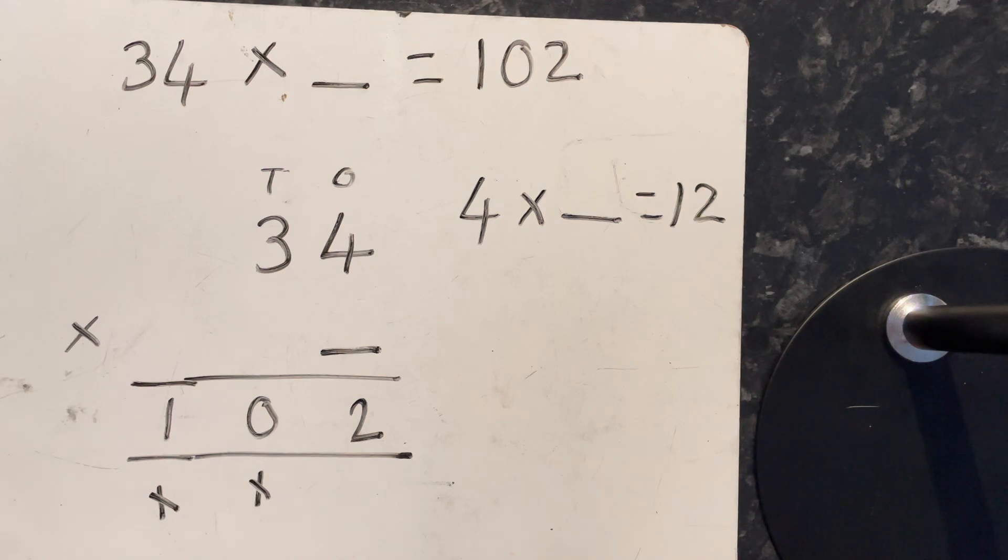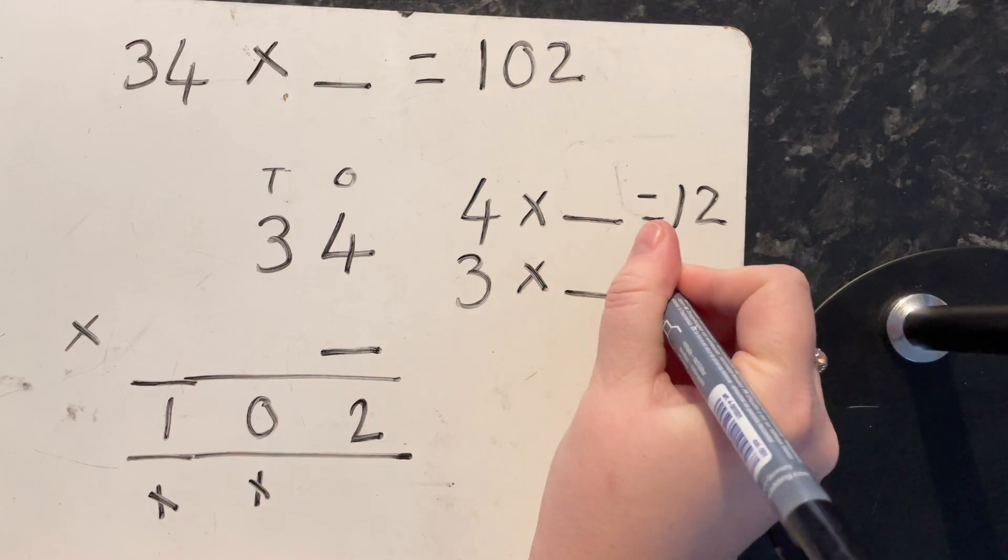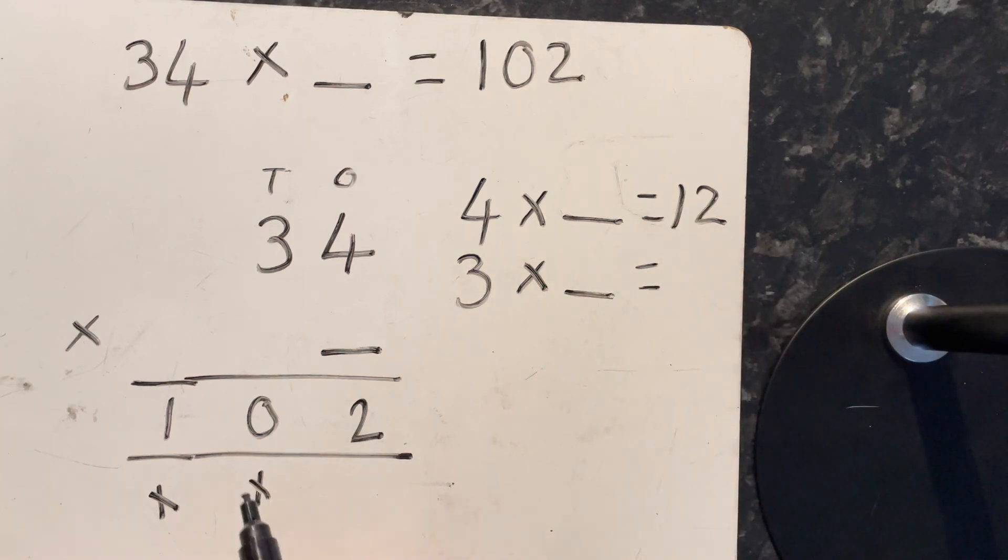We also know that 3 times something gave us 9 before we added on the extra one. So we've got 3 times something equals 9.